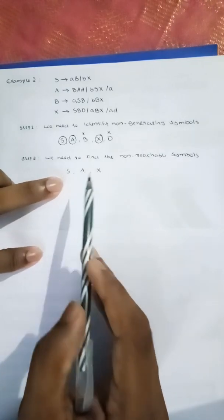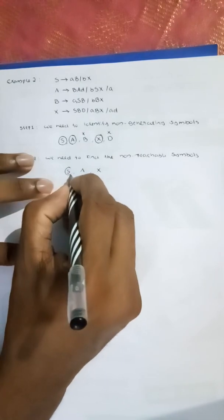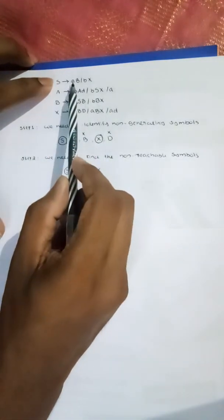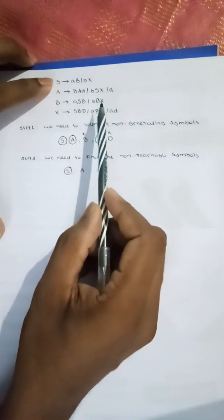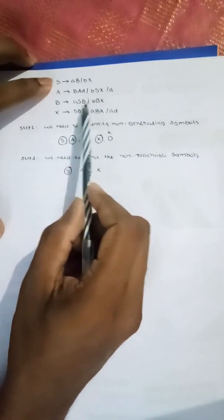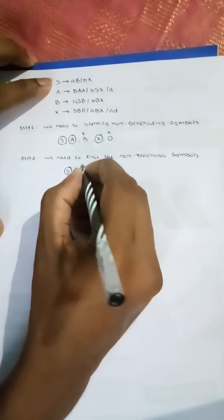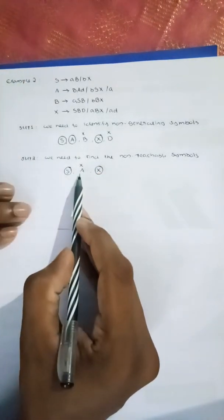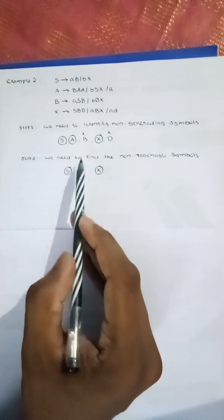S and A are the reachable symbols starting from S. S is the start symbol, so it is reachable. S derives A and Y, so A is reachable. A produces B, so B is reachable. X is a non-reachable symbol. The non-reachable symbols are X, and non-generic symbols include B and D. The non-reachable symbols result in their productions being removed.